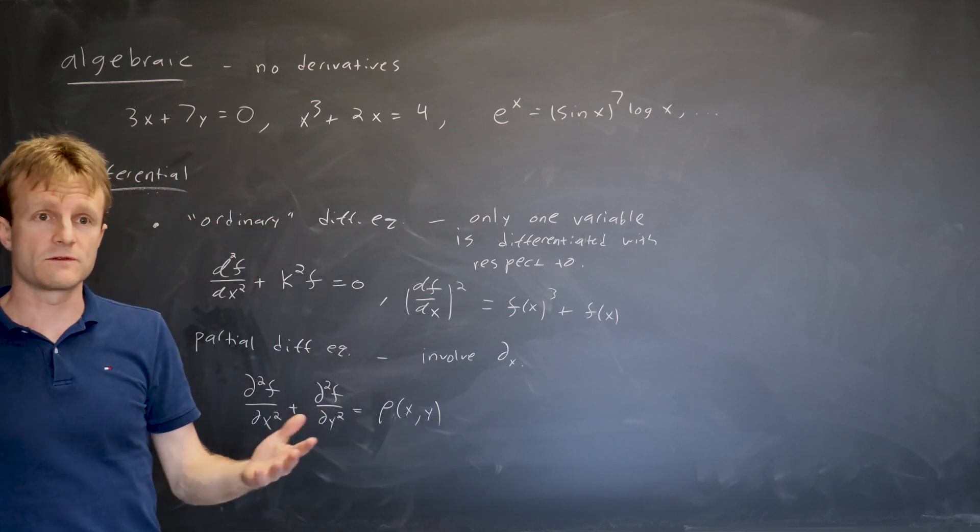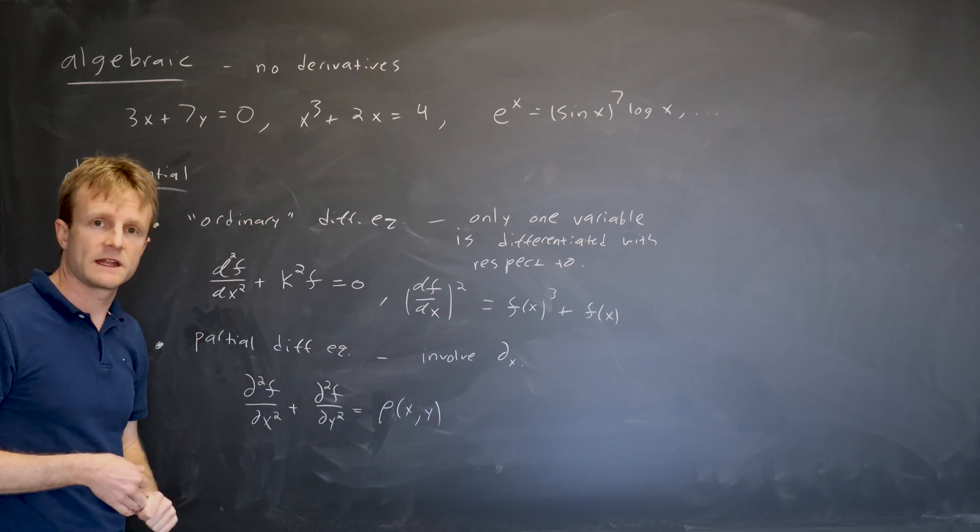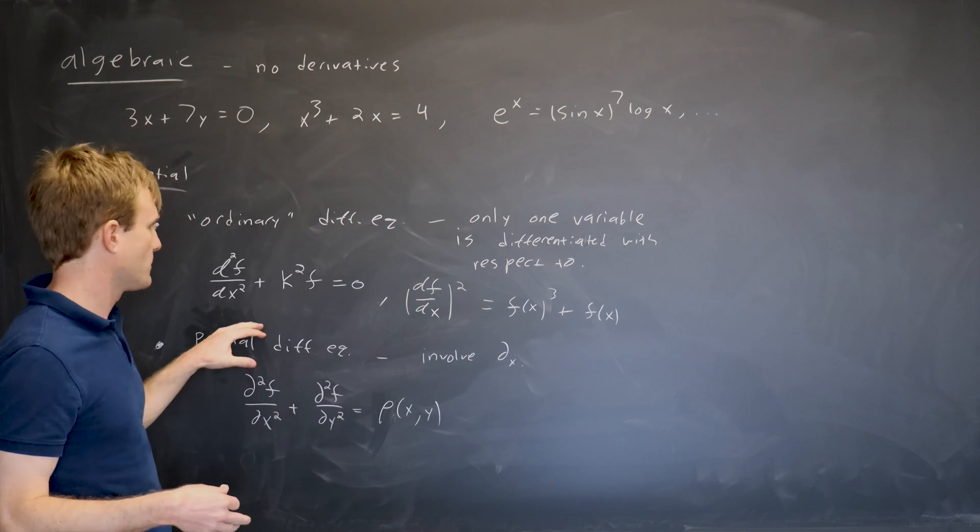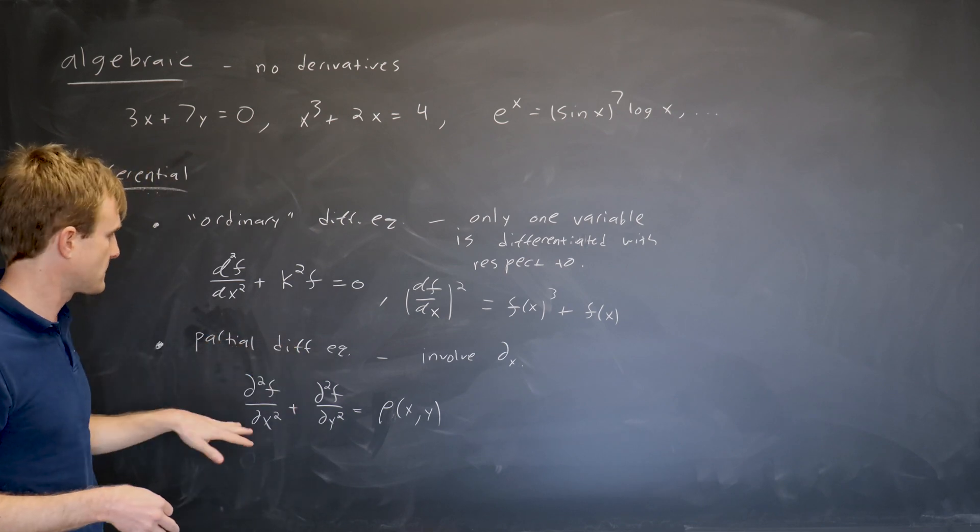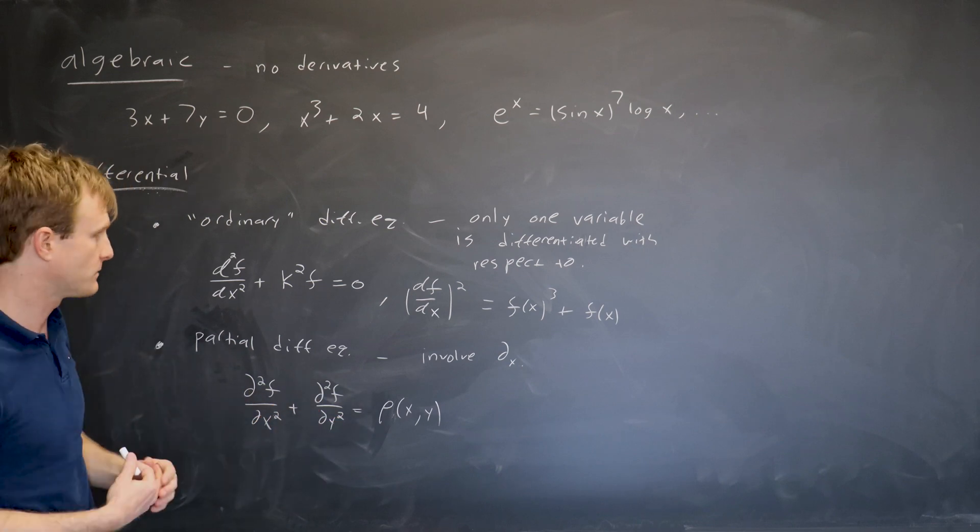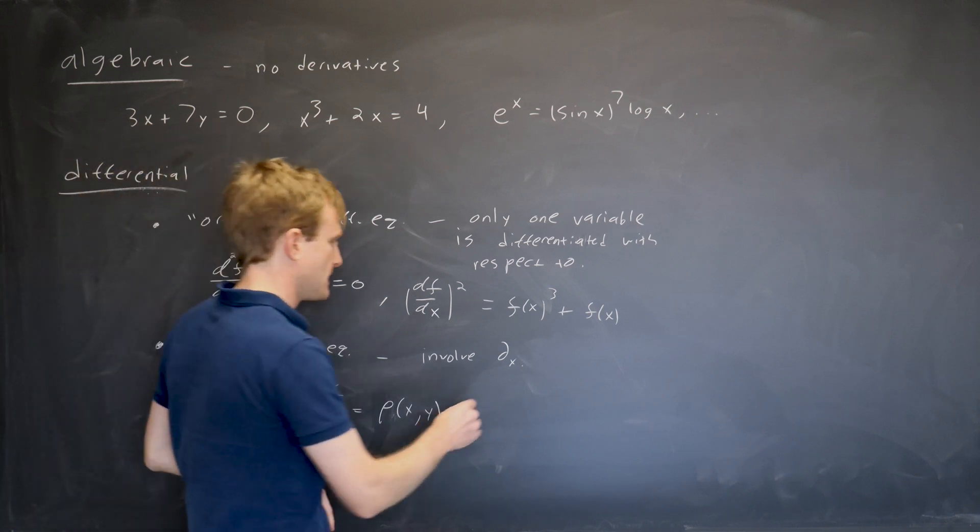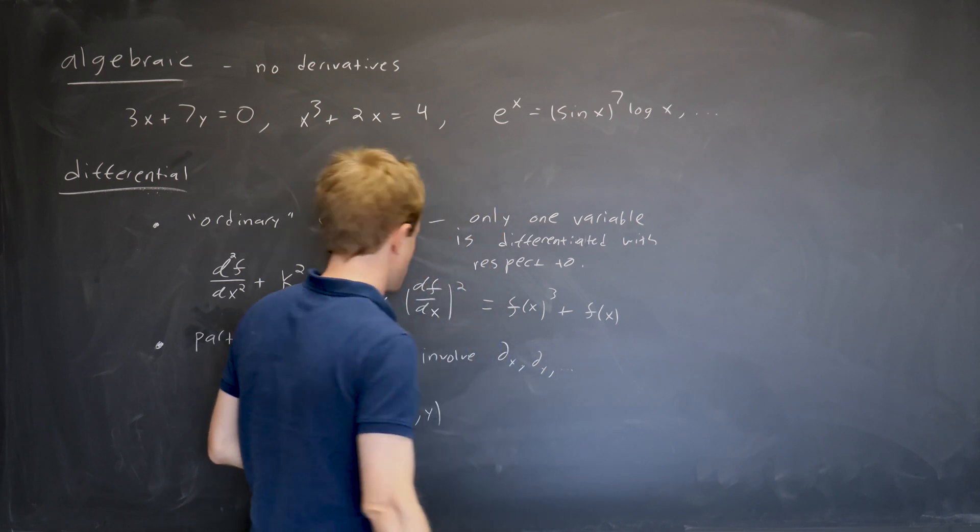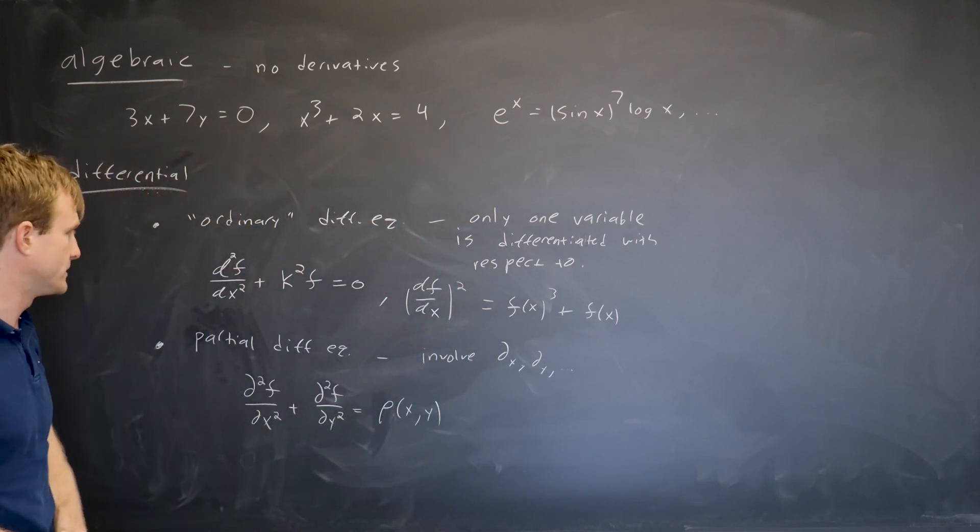There are other equations that come up a lot. Heat equation, Schrodinger equation is the foundation of quantum mechanics, and these are all partial differential equations. It doesn't have to be called x and y. One variable could be t, like the wave equation for waves on a string or anything. If it involves partial derivatives, then we call it a partial differential equation.